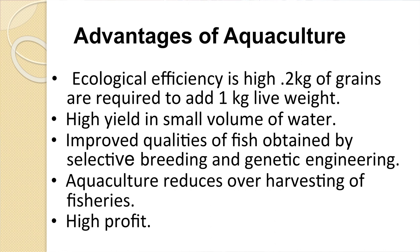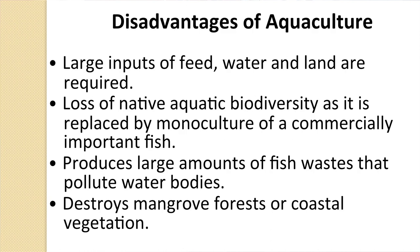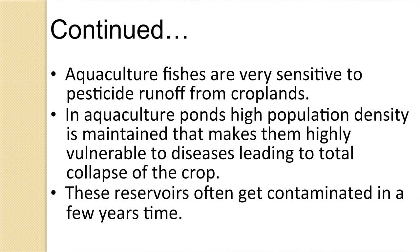Advantages of aquaculture: ecological efficiency is high — 2 kg of grain is required to add 1 kg of live weight; they are high-yielding; improved quality of fish by selective breeding; aquaculture reduces over-harvesting of fisheries; and it is a highly profitable business. Disadvantages: large inputs of feed, water, and land are required; loss of native aquatic diversity as it is replaced by monoculture of commercially important fish; it produces large amounts of waste that pollutes the water body; and it destroys mangrove forests or coastal vegetation. Aquaculture fishes are also very sensitive to pesticide runoff from croplands, and high population density in aquaculture ponds makes them highly vulnerable to diseases leading to total collapse of the crop.